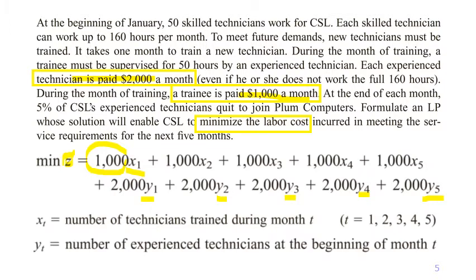xt is the number of technicians in training during month t — that is why they are paid $1,000, because they are still in the training session in month t. So x1 is the number of technicians in training during month one, and so on. yt is the number of experienced technicians at the beginning of month t. Suppose you hire someone to join training at month one; this person will become an experienced technician in month two.